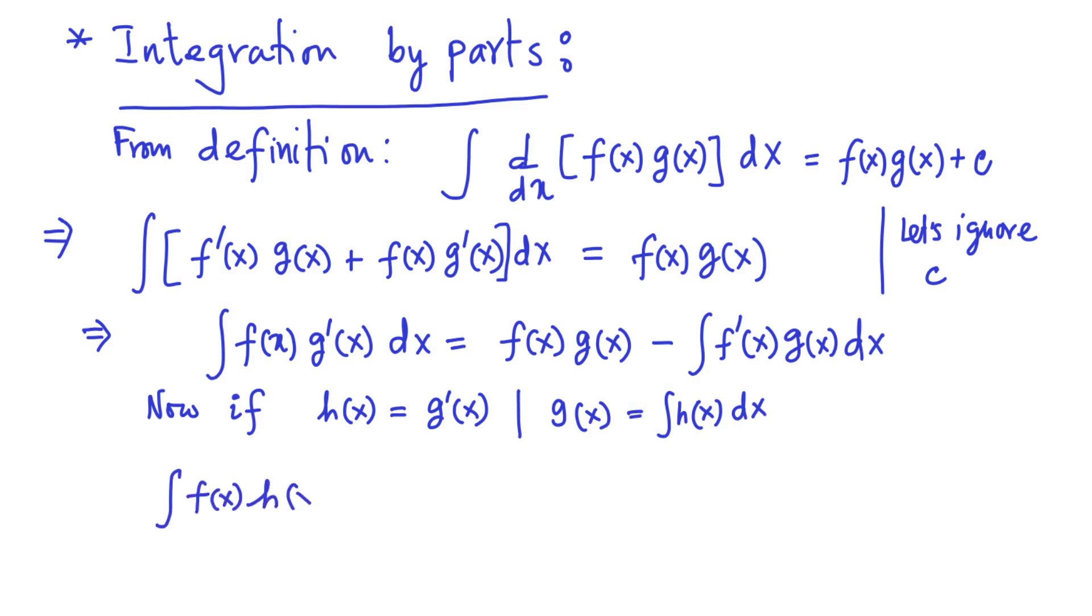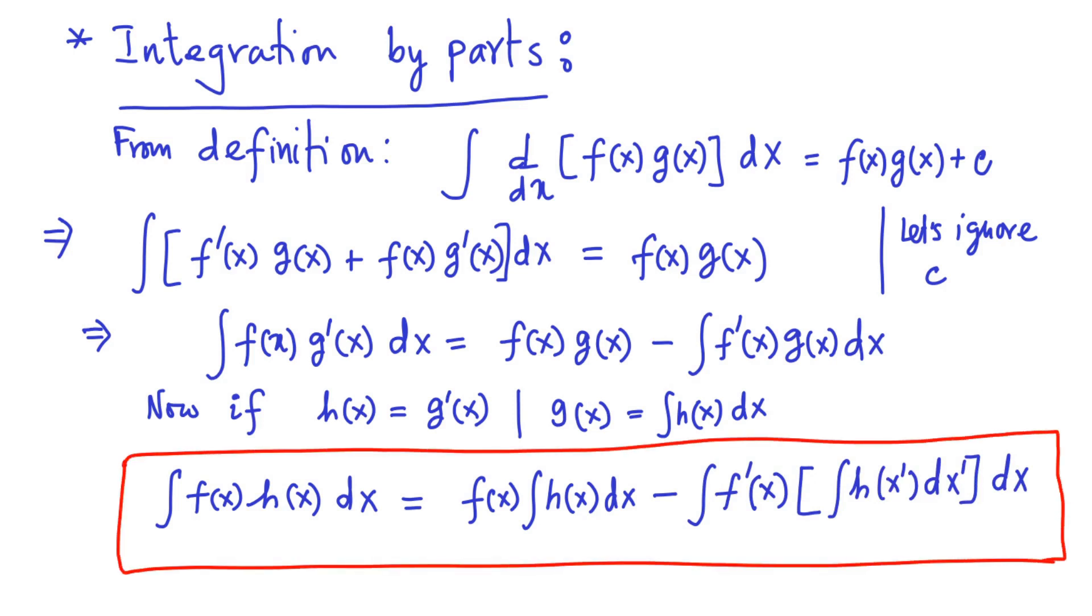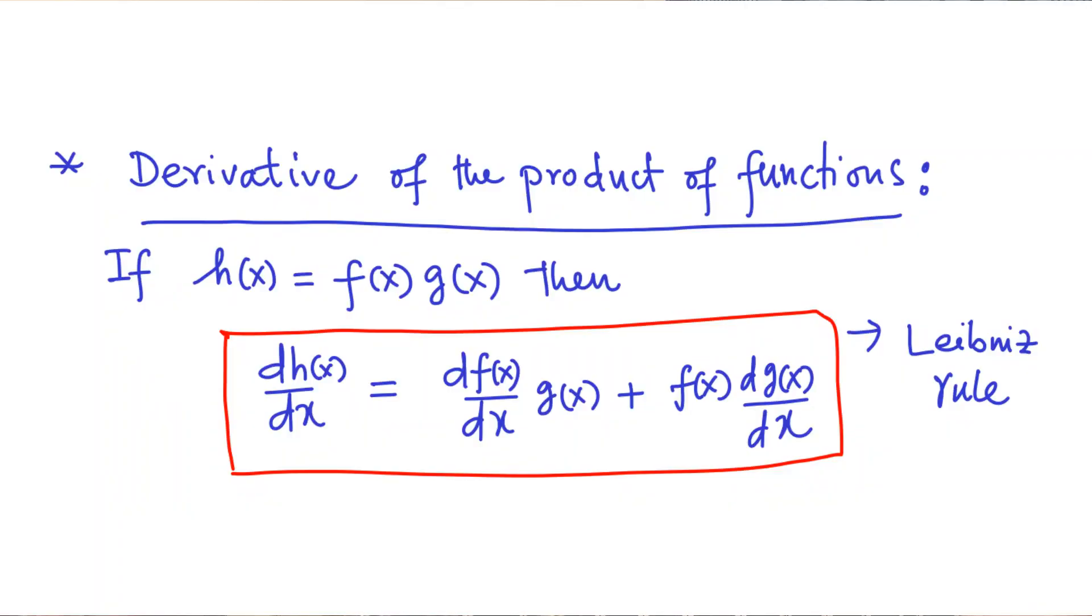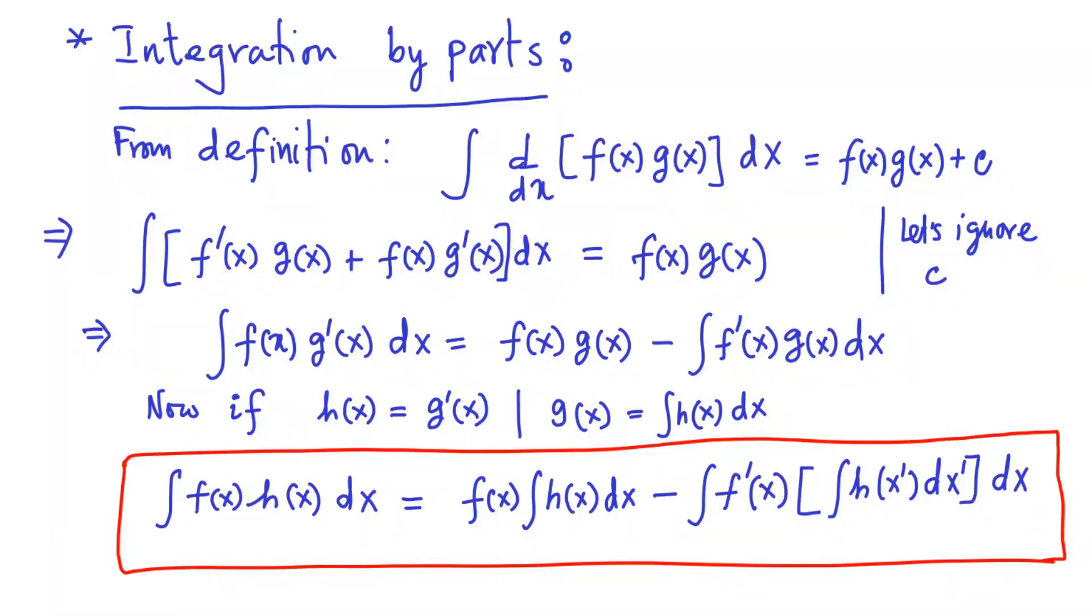Clearly the integration of product of two functions f(x) and h(x) then can be written as f(x) times integral of h(x) dx minus integral of f prime(x) times the integral of h(x) dx, integrated over x. We have seen earlier that derivative of product of two functions can be expressed using Leibniz rule. Similarly, by using integration by parts, we can express the antiderivative of product of two functions.